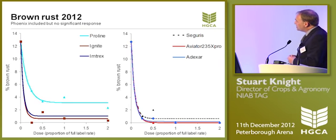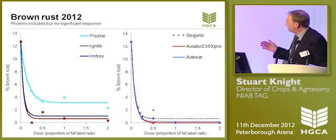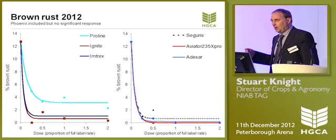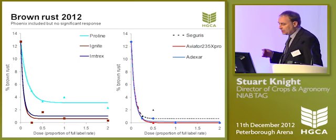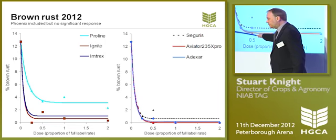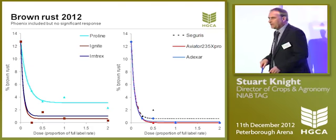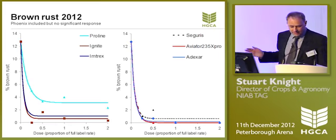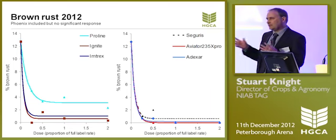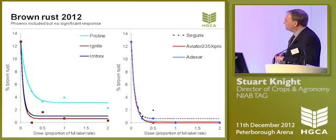Finally, on wheat brown rust: first of all, there is a difference between the azoles, with Proline clearly adrift from epoxiconazole, so epoxiconazole is the stronger of the two azoles on brown rust. But the SDHI has contributed enormously to brown rust control. The straight Intrex fluxapyroxad is doing a very good job of brown rust control even without the azole — very similar to epoxiconazole. All three of the SDHI-azole mixes are very strong on brown rust. Phoenix was in this series but we only have one year's data and didn't get a significant disease control response from Phoenix in this particular trial.